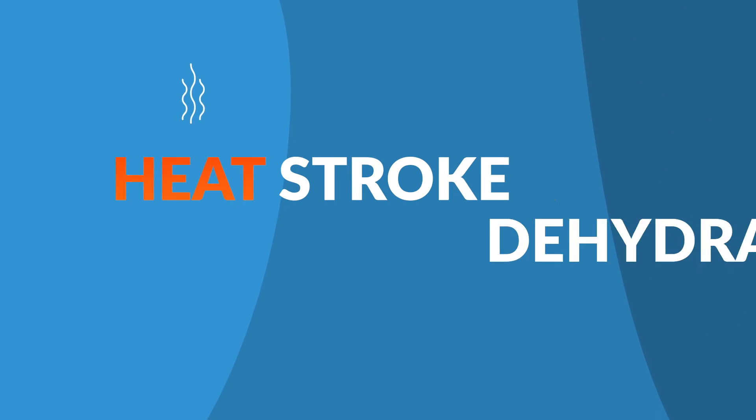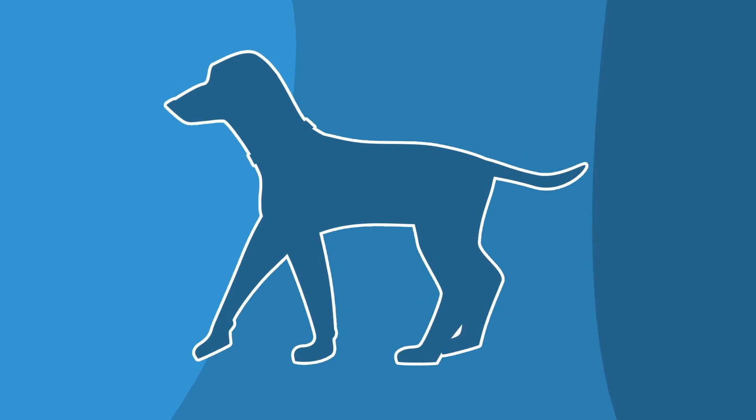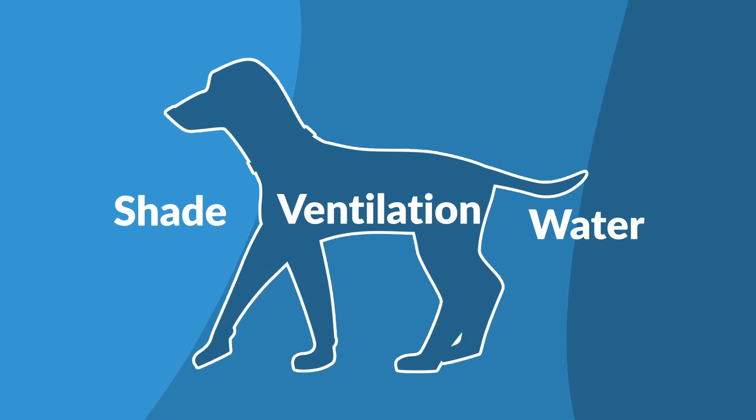When pets overheat or don't have access to sufficient water, things can get dangerous quickly. Be sure your pet always has access to shade, ventilation, and water.